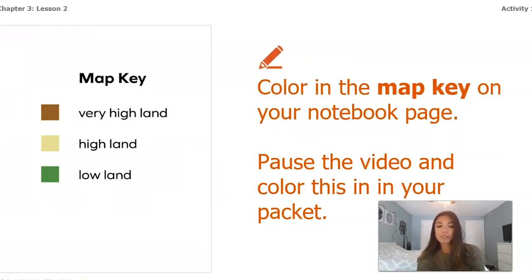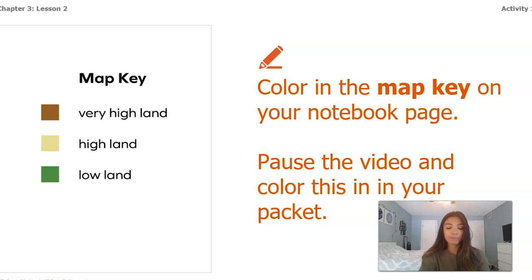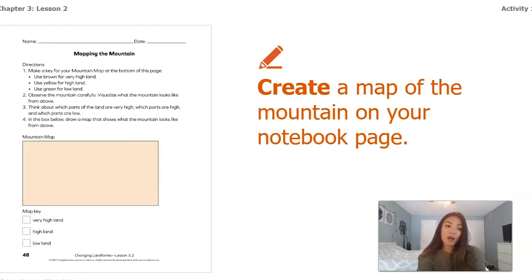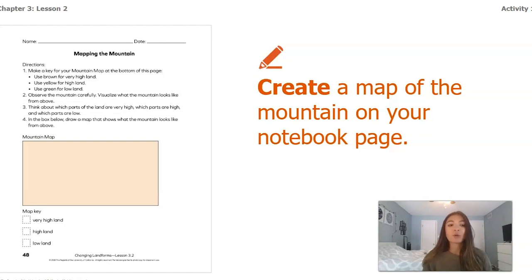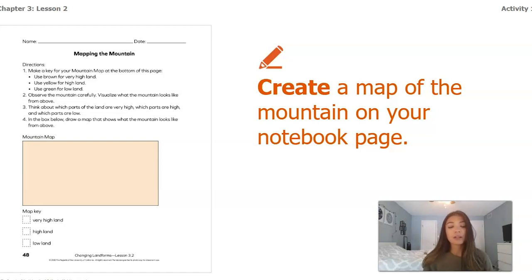You can pause this video and on your worksheet color in the map key: brown to show very high land, yellow to show high land, and green to show low land. Now that you've colored in your map key, you're actually going to create a map of the mountain. Remember, a map is different from a photograph — our map won't focus on showing the shape of the mountain but will use those colors from the key to show where the high land, very high land, and lower land are. Go ahead and pause the video to work on drawing your map.